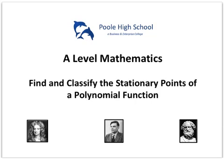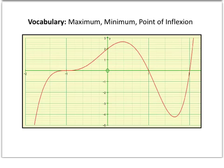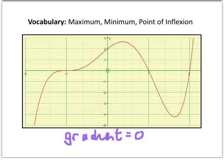Welcome. This is going to be a short video on how to find and classify the stationary points of a polynomial function. We first need to define what we mean by a stationary point. A stationary point is any point on a curve where the gradient of the curve equals zero.